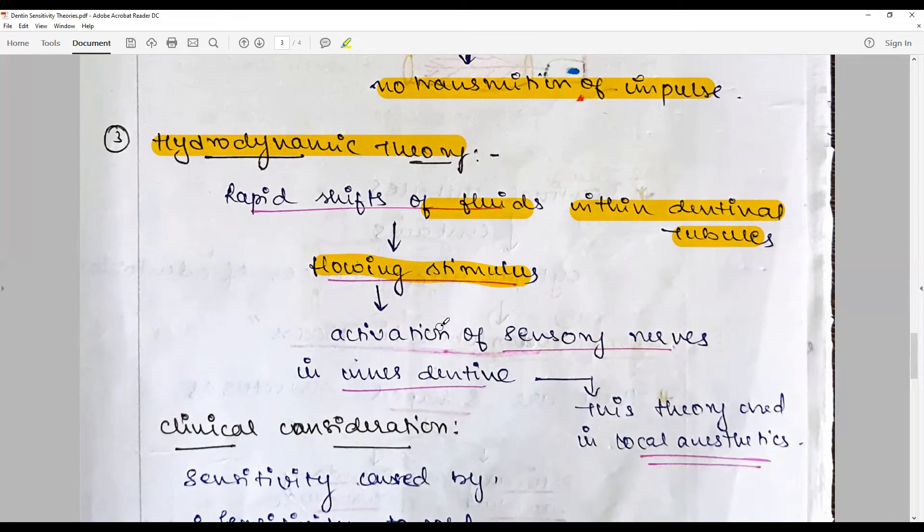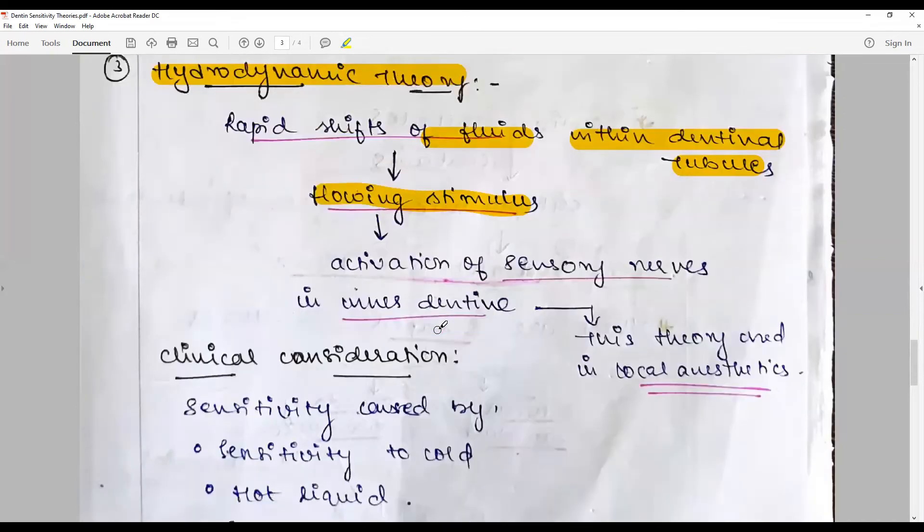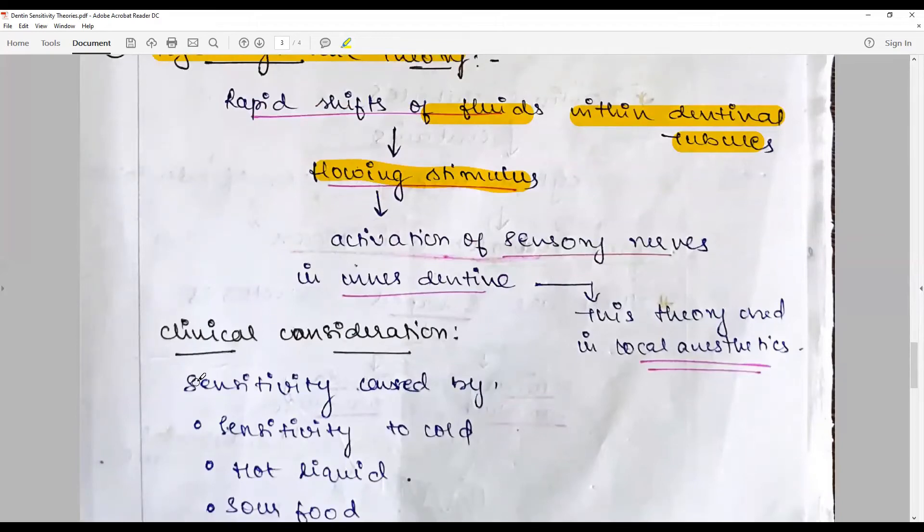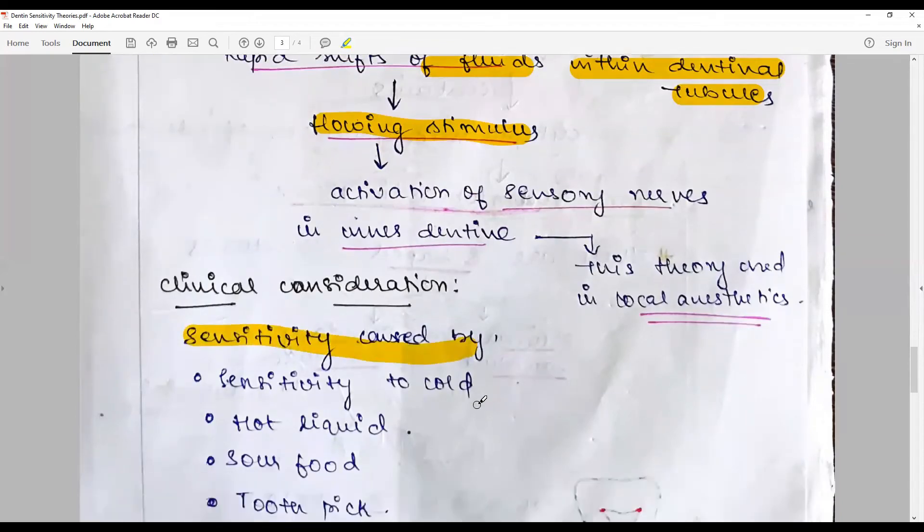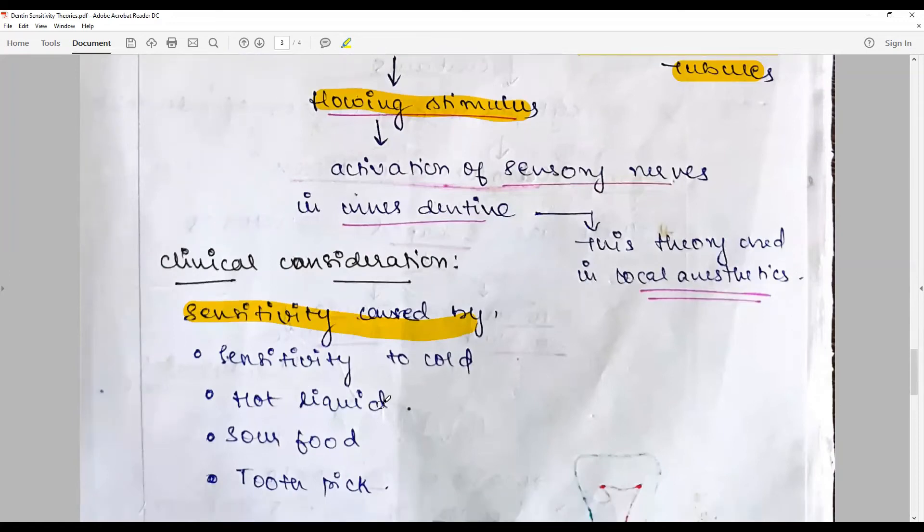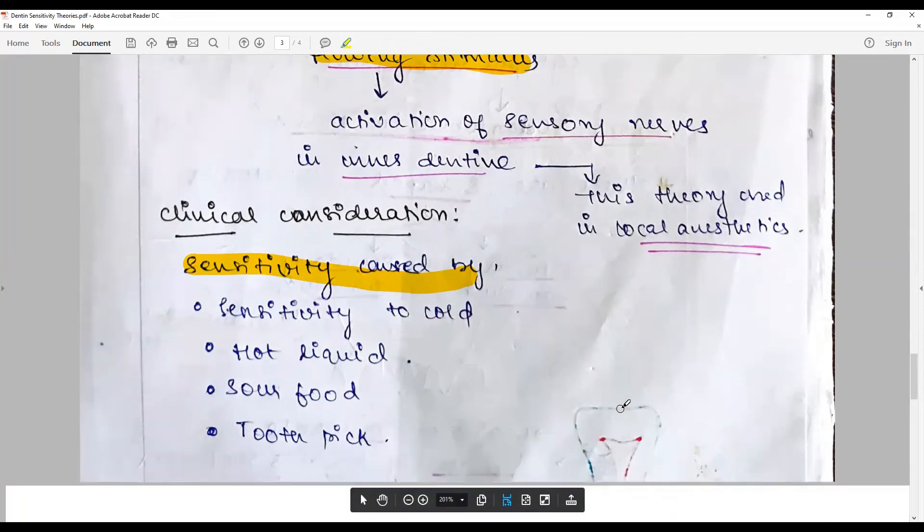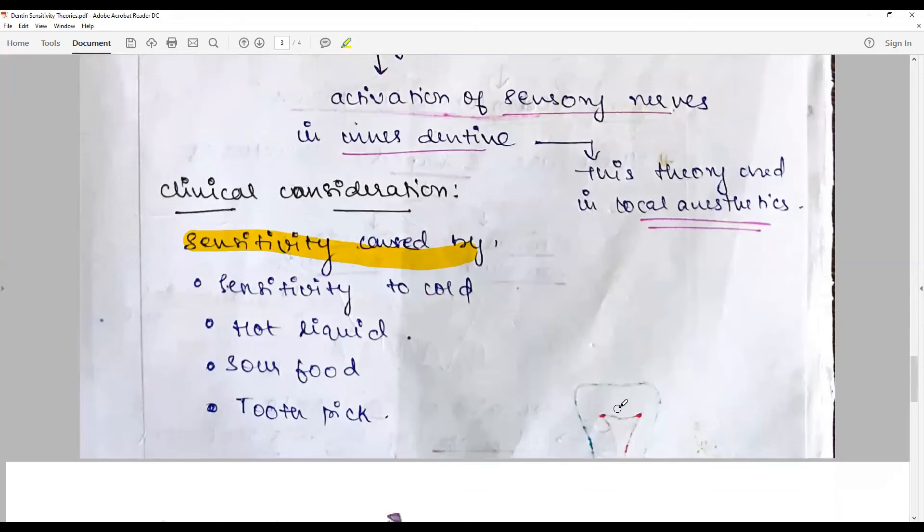Clinical consideration: This is how sensitivity in exposed areas of dentin—namely your cervical areas or on your incisal or occlusal surfaces—causes sensitivity to cold, hot liquids, or sour food. Though it is a protective reflex, repeated or exaggerated responses could cause an abnormality or perceived hyperreaction to sensitivity to cold, hot liquids, sour food, toothpicks, ice creams—name it.